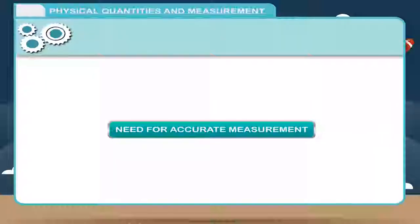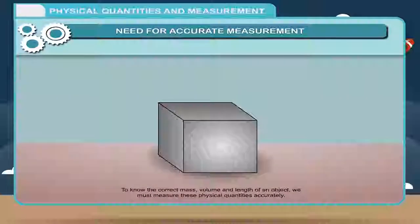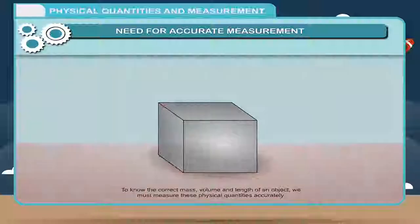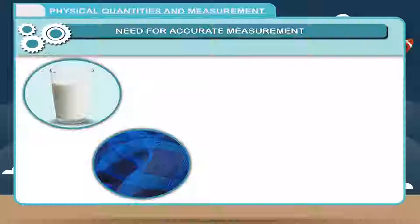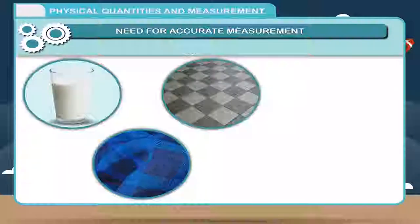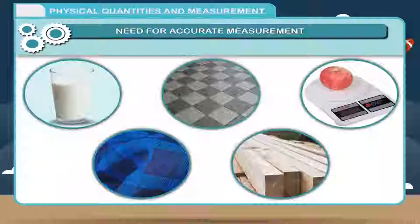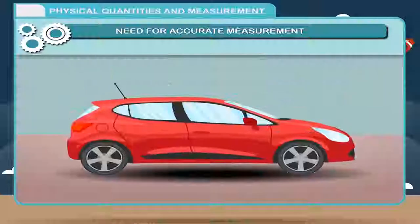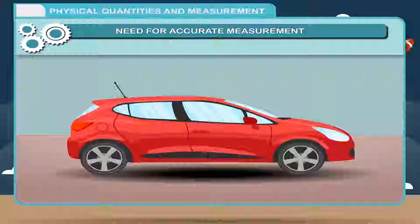Need for accurate measurement: To know the correct mass, volume, and length of an object, we must measure these physical quantities accurately. We purchase milk by volume, cloth by length, floor tiles by area, timber wood by volume, and fruits and vegetables by mass. Each and every component of a machine should have a high degree of accuracy of measurement.